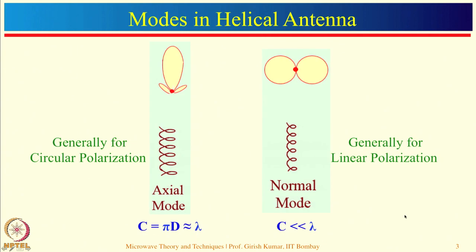Helical antennas can be used in two different modes. One mode is known as axial mode, where the circumference C = pi*d is approximately equal to lambda, and this is generally designed for circular polarization. The other mode is normal mode, where circumference is much much less than lambda. A normal mode helical antenna length may be of the order of lambda/4, and it is generally designed for linear polarization.